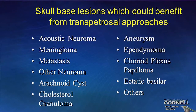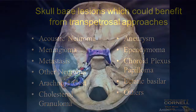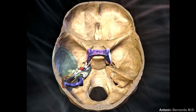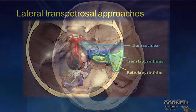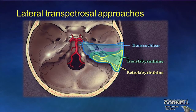There are many skull-based lesions which could benefit from transpetrosal approaches. One of these approaches is the anterior petrosectomy. The inferior limit of the anterior petrosectomy is a line joined to the internal acoustic canals, whereas the inferior limit of the trans-labyrinthine approach is a line joined to the jugular bulbs.